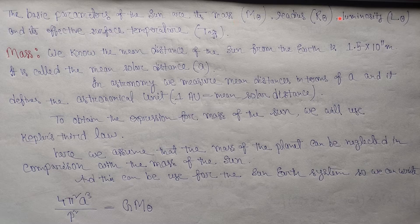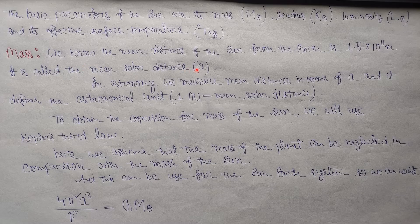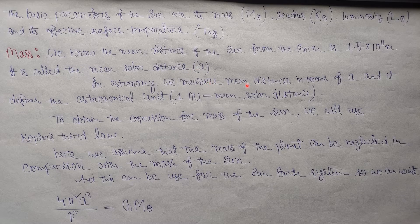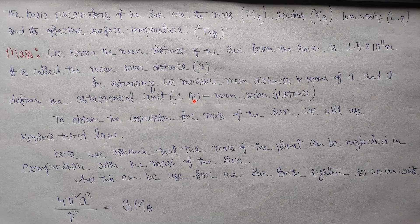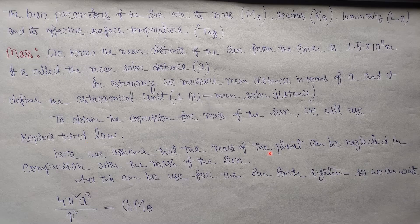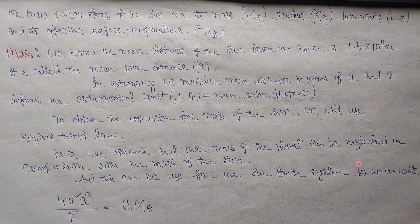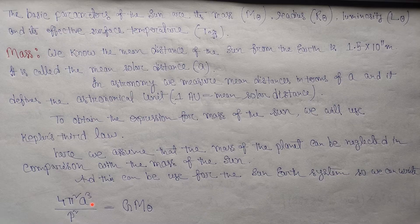So what is solar mass? We know that the mean distance of the sun from the earth is about 1.5 × 10^11 meters, and it is called the mean solar distance, which is denoted by a. In astronomy, we measure mean distance in terms of a, and it defines the astronomical unit. One astronomical unit equals mean solar distance. To obtain the expression for mass of the sun, we will use Kepler's third law. Here we assume that the mass of the planet can be neglected in comparison with the large mass of the sun, and this can be used for our earth-sun system. From Kepler's law we can write 4π²a³/P² = GM.